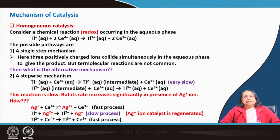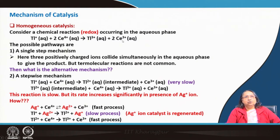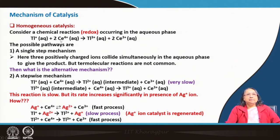For the mechanism of homogeneous catalysis, here is an example: thallium(I) in an aqueous-phase redox reaction. Thallium(I)⁺ is oxidized to thallium(III)³⁺ while cerium(IV)⁴⁺ is reduced to cerium(III)³⁺. This is the balanced redox equation.